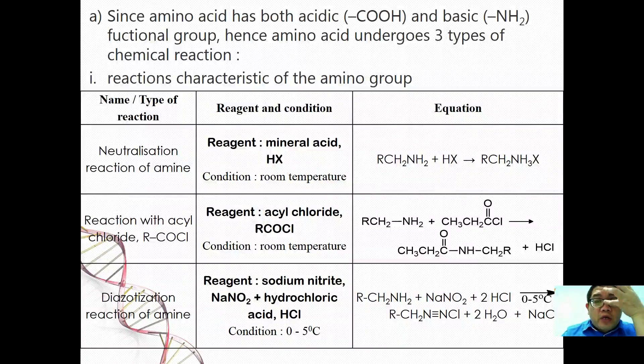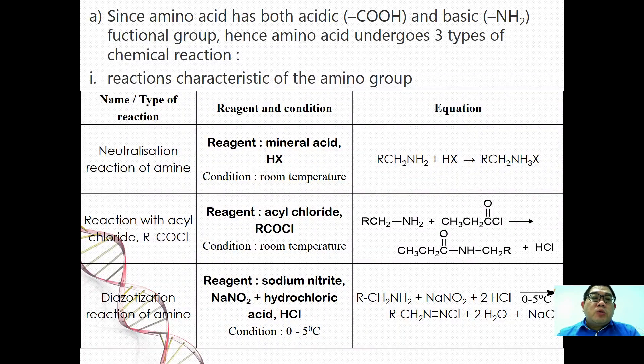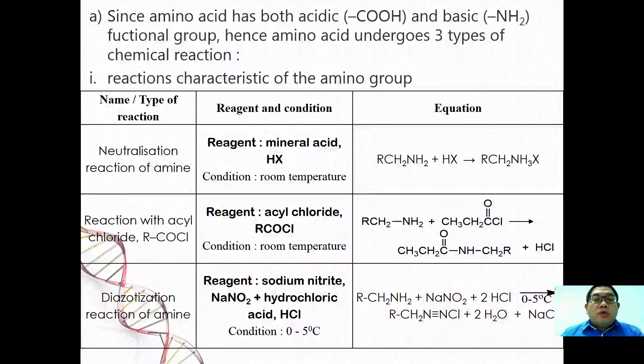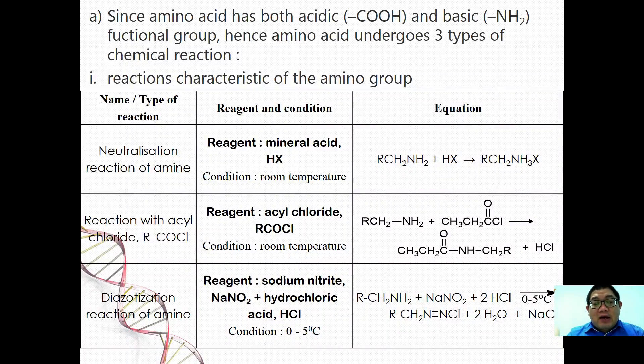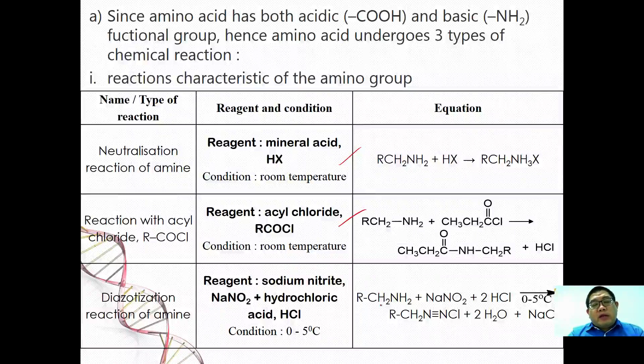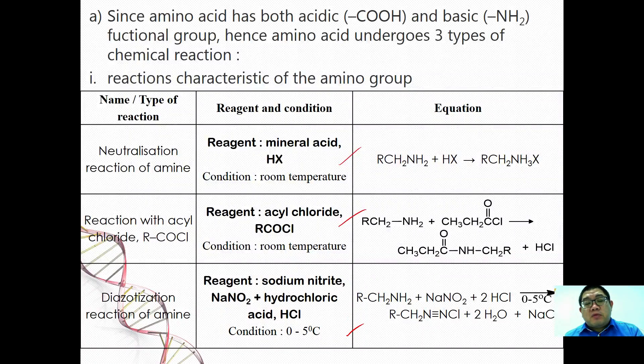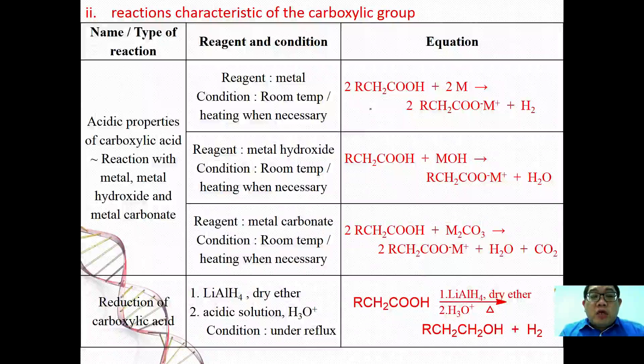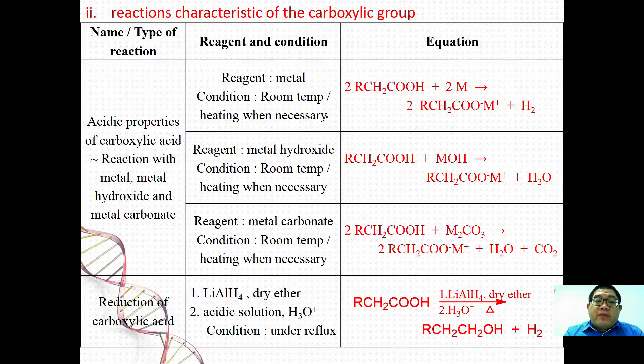Now since amino acid has both COOH and basic NH2 functioning group, hence amino acid undergoes three types of chemical reaction. It can undergo all chemical reactions that can be undergone by amine that we discussed just now, where it reacts with acid, it reacts with acid chloride, and it reacts with sodium nitrite followed by mixing with hydrochloric acid.